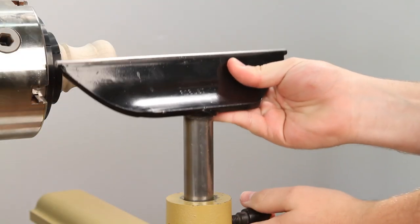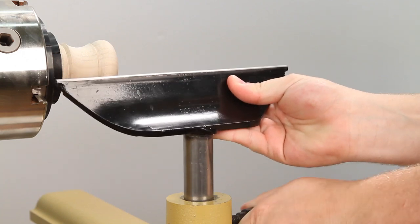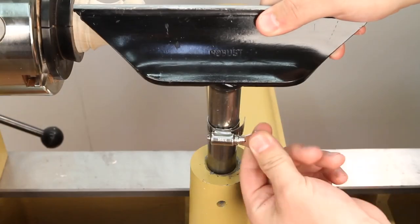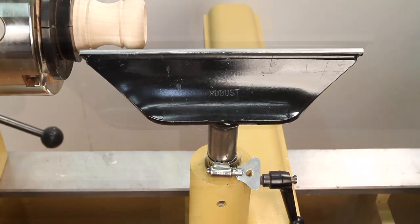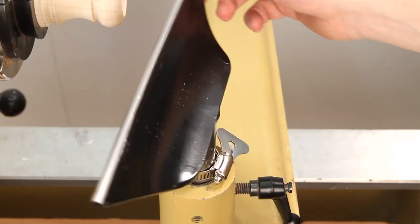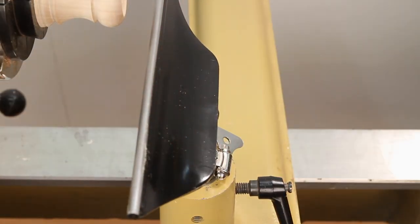No more fumbling with the tool rest height every time you need to reposition it. This handy little device locks onto the tool rest post, allowing you to easily pivot the tool rest from side to side while maintaining center height.